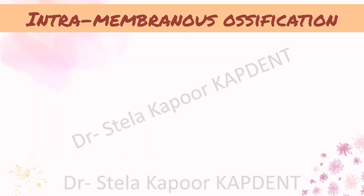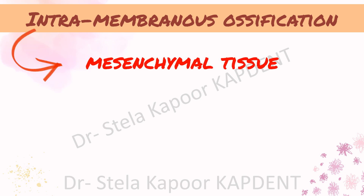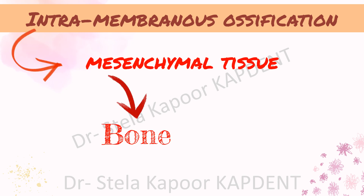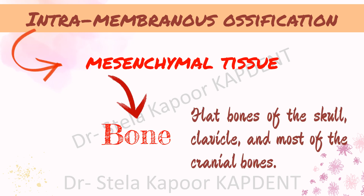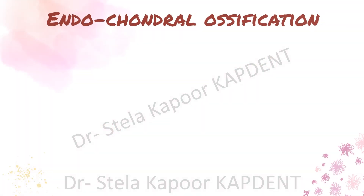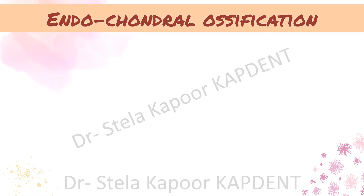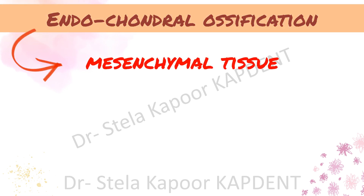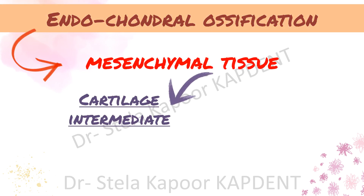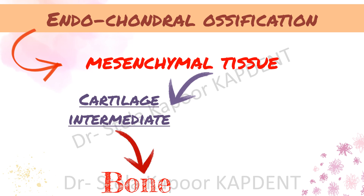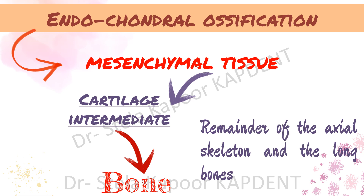Intramembranous ossification directly converts the mesenchymal tissue into bone and forms the flat bones of the skull, clavicle, and most of the cranial bones. Endochondral ossification, on the other hand, begins with the mesenchymal tissue which transforms into a cartilage intermediate, and it is this cartilage intermediate which is eventually replaced by bone. This ossification is responsible for the formation of the remainder of the axial skeleton and the long bones.